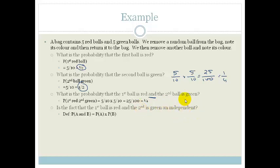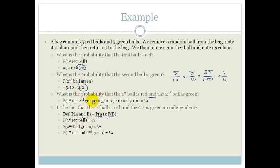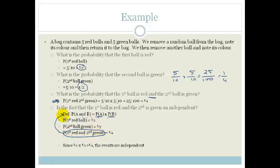Is the event that the first ball is red and the second ball is green an independent event? The definition says the probability of A and B has to equal the probability of A times the probability of B. The probability of the first ball being red is a half, and the probability of the second ball being green is a half. The probability of both is a quarter — which is 25 over 100. Since a half times a half equals a quarter, we can see these events are independent.